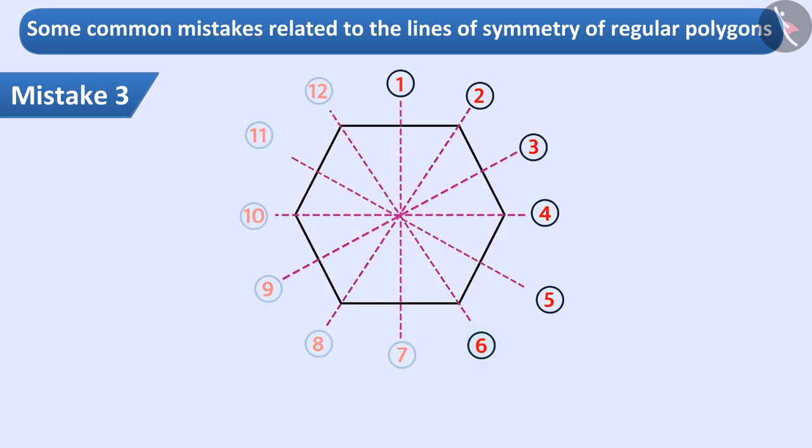In this way, they get twice the actual number of lines of symmetry. Similarly, some children stop counting on the line from which they started counting inadvertently. In this way, they count a line twice.